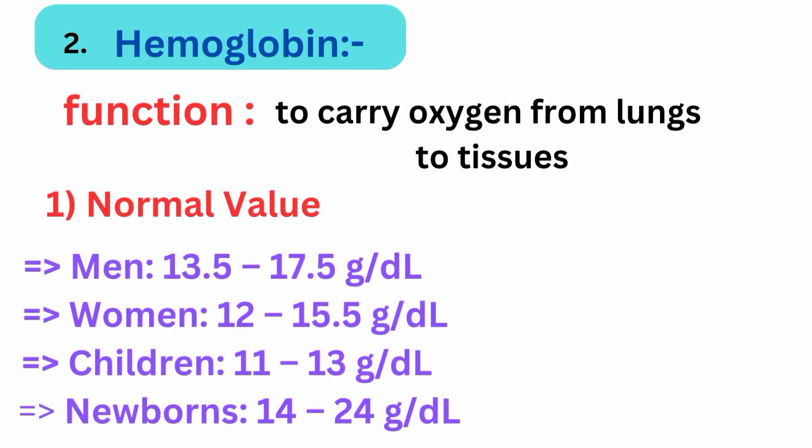Hemoglobin's function is to carry oxygen from the lungs to body tissue. Normal values: men are 13.5 to 17.5 g/dL, women are 12 to 15.5 g/dL, children are 11 to 13.5 g/dL, and newborns are 14 to 24.5 g/dL.